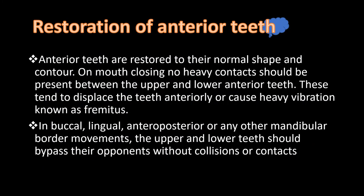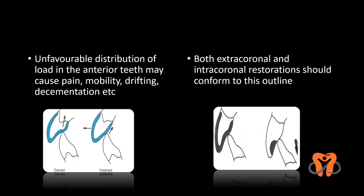Coming to the restoration of anterior teeth: anterior teeth are restored to normal shape and contour. On mouth closing, no heavy contacts should be present between upper and lower anterior teeth. If these contacts develop, they will tend to displace the teeth anteriorly or cause heavy vibration known as fremitus. In buccal, lingual, anterior, posterior, or any other mandibular border movement, the upper and lower teeth should bypass their opponents without collisions or contacts. You can see in the diagram that the occlusal anatomy is properly developed in this crown, so when the opposing lower tooth comes into contact with the upper, the forces are vertically directed.